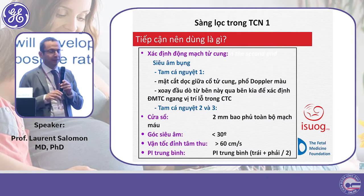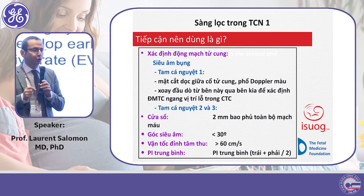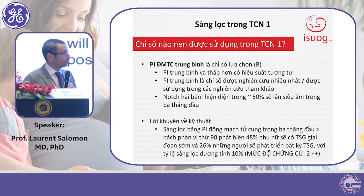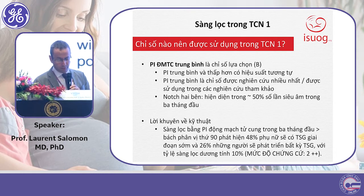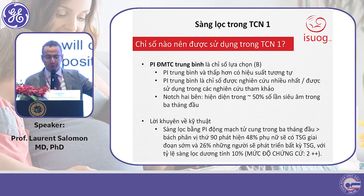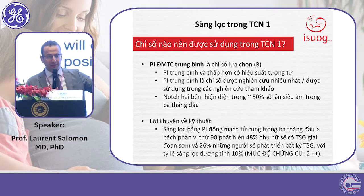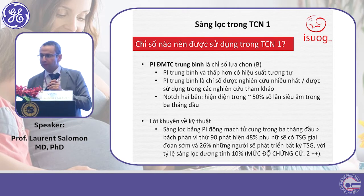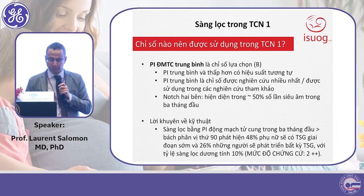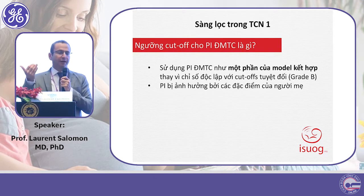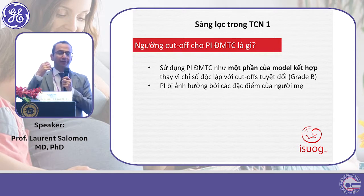In the first trimester, if you want to screen for preeclampsia, we recommend using the mean uterine artery PI. However, the performance of such screening is not very good, with only about half of preeclampsia cases detected at a 10% false positive rate. There is no cut-off value to classify the mean uterine artery PI as normal or abnormal — it should be used as part of a combined model, not alone.